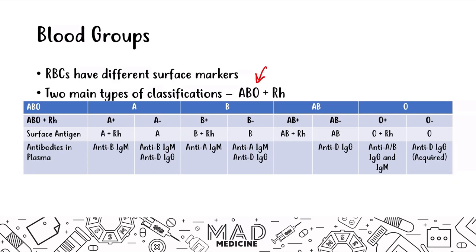Together, these give you the A positive, A negative, B positive, B negative, AB positive, AB negative, O positive, and O negative classifications. These classifications use both the ABO and the RH subgroups.